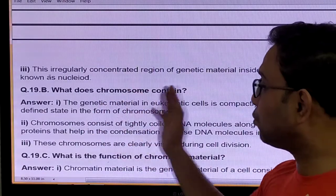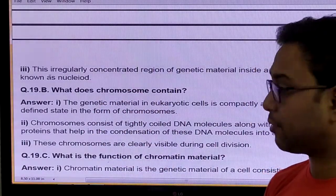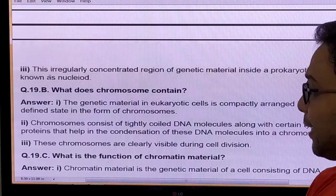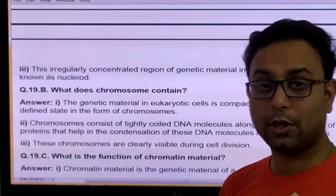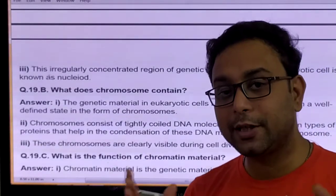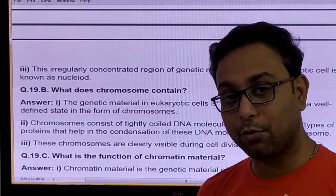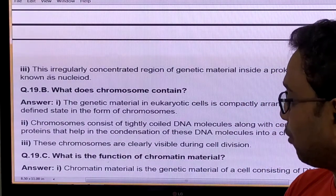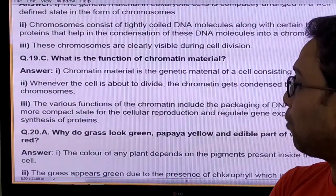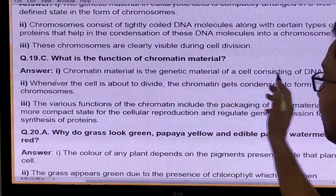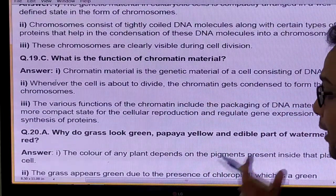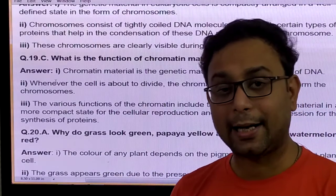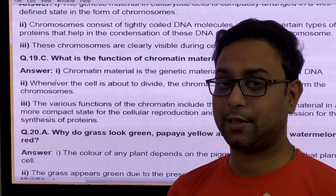Question: What does chromosome contain and how is genetic material of eukaryotic cells compactly arranged? The genetic material is compactly arranged and is called the chromosome, which is made up of DNA — deoxyribonucleic acid. Chromatin material is the genetic material of the cells and is the most important thing — it controls the hereditary characters.